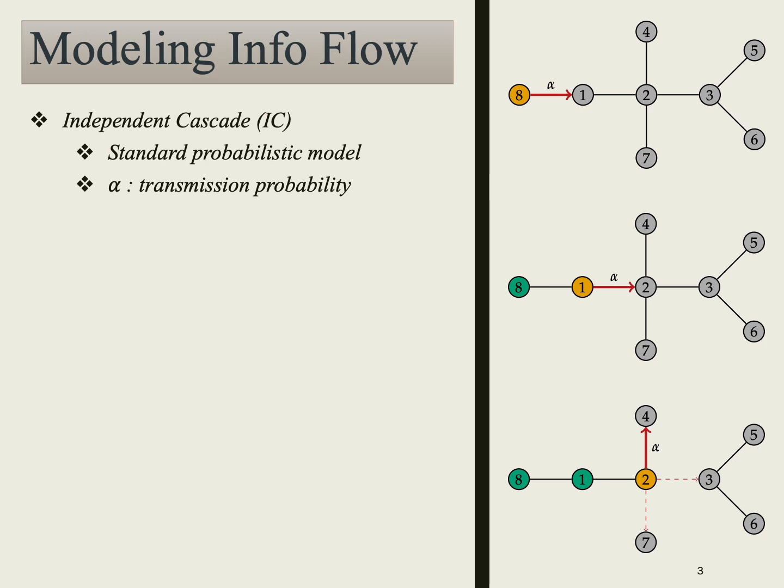We simulate the spread of information in networks using the independent cascade model and assume information is transmitted with a uniform probability. Since computing these probabilities is computationally challenging, we estimate them through Monte Carlo simulations.